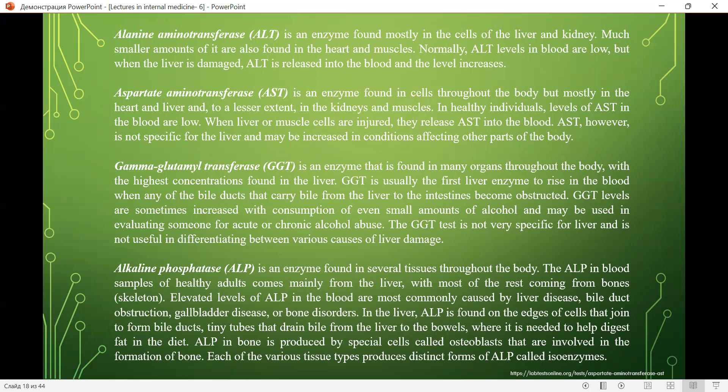Aspartate aminotransferase (AST) is an enzyme found in cells throughout the body, mostly in the heart and liver and to a lesser extent in the kidney and muscles. In health, AST levels in blood are low. When liver or muscle cells are injured, they release AST into the blood. However, AST is not specific for the liver and may be increased in conditions affecting other parts of the body.